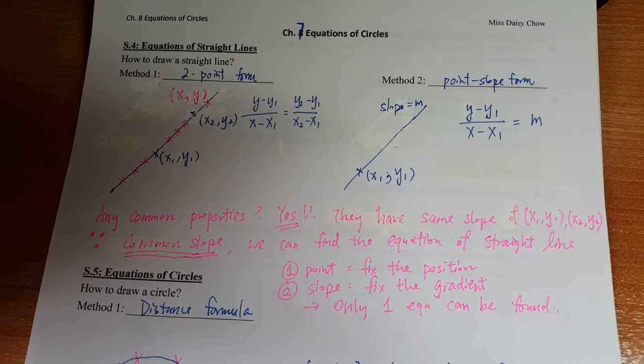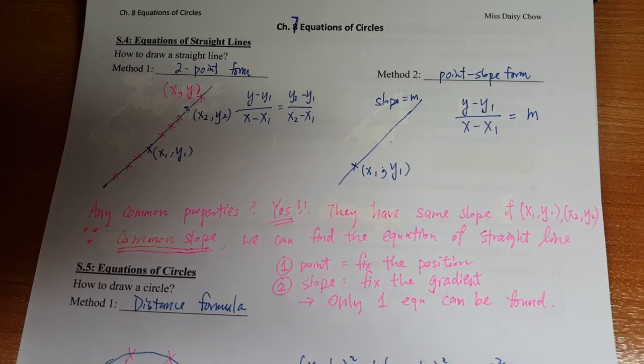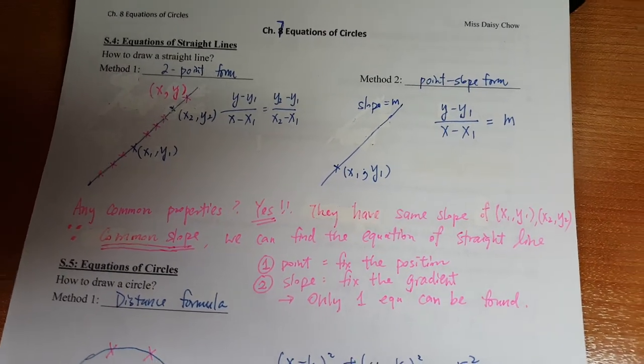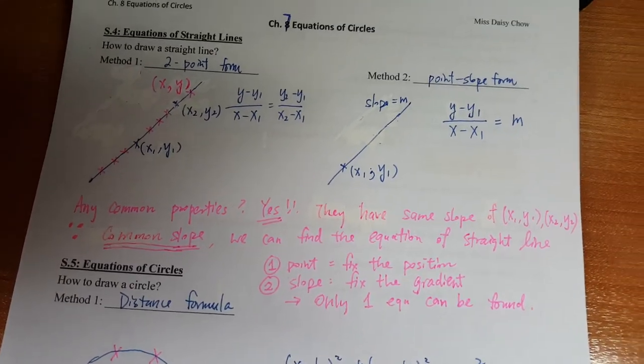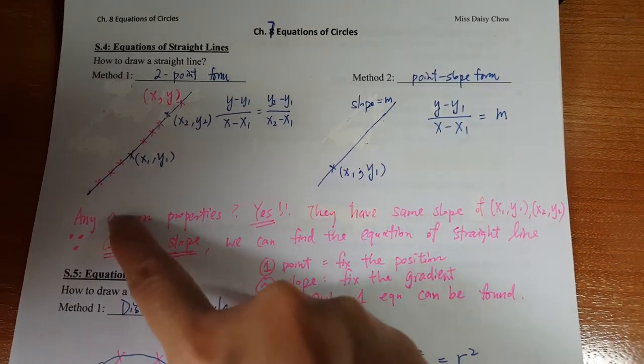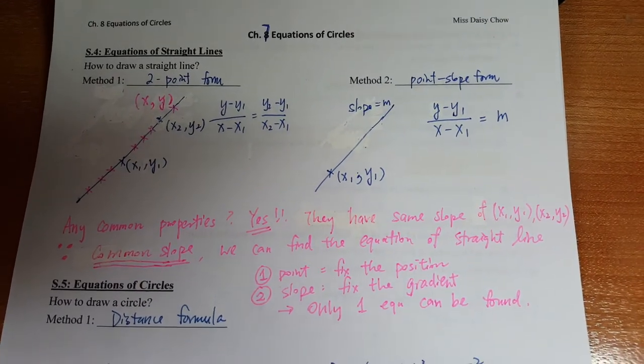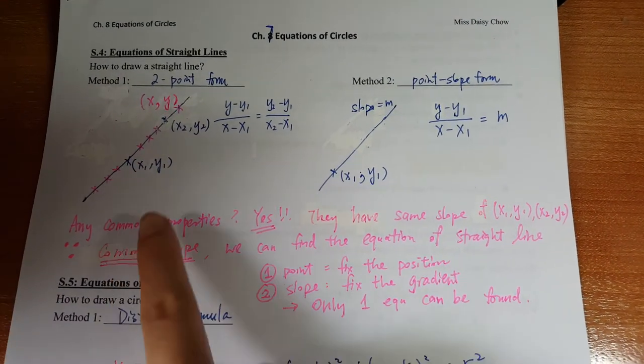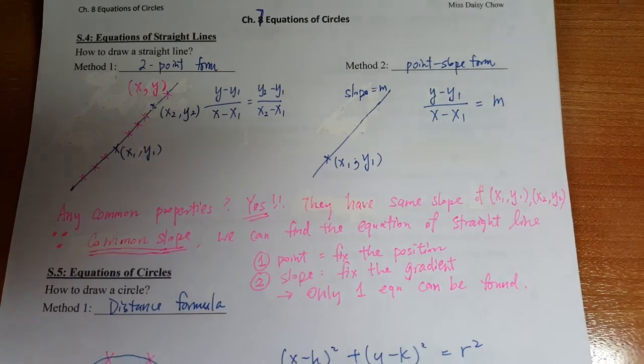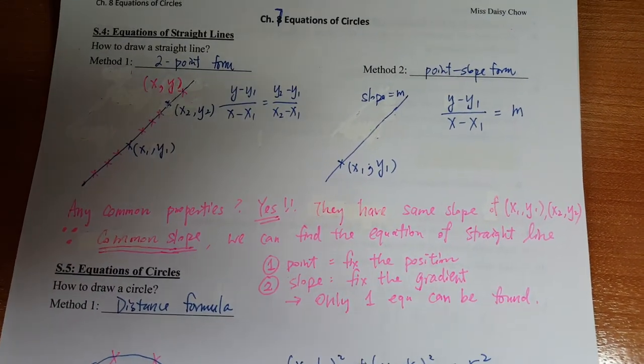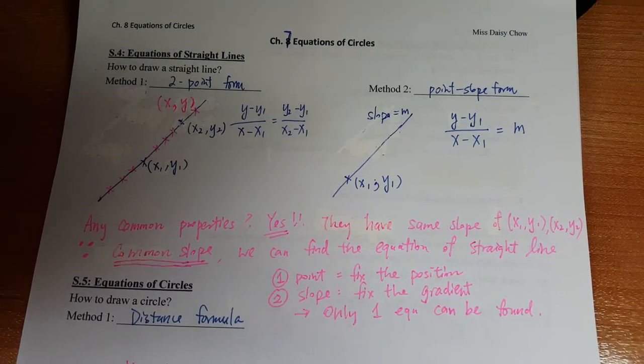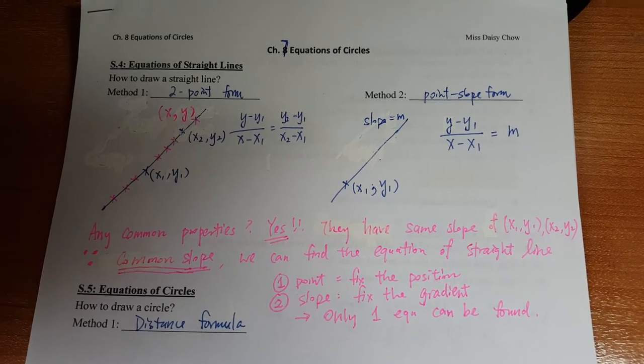You can either use the two point form or you can use the point-slope form. Any common properties between these points? Yes, they have the same slope of these two points, and using these properties you can find the equation of straight line.